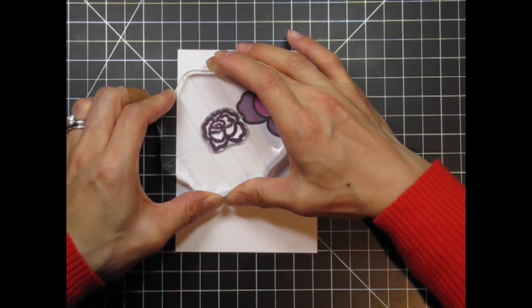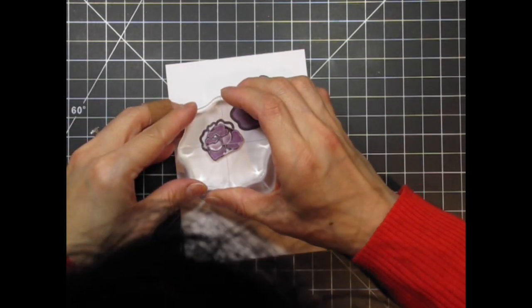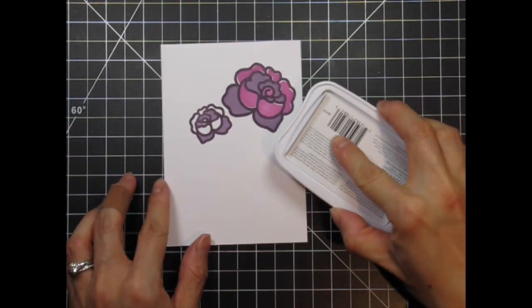After the large rose is finished, I repeat the same process with the smaller rose. Elderberry first, then Sweet Plum, and finally Lilac Posies.